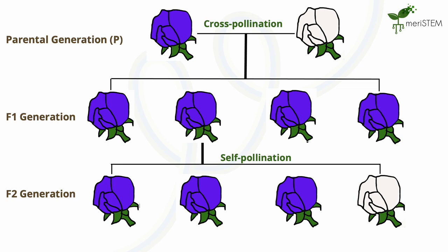When Mendel allowed these hybrid purple flowering plants from the first generation to self-pollinate, the new generation contained both purple and white flowers. This indicated that the white trait was masked by the dominant purple trait, so he referred to this white trait as recessive. From this classical experiment, Mendel was able to conclude that the variation of traits he observed was due to the interaction of dominant and recessive factors, or alleles.